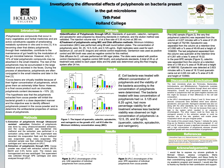It is becoming very clear that dietary polyphenols, through their metabolites, contribute to the maintenance of gut health by the modulation of gut microbial balance. However, only five to ten percent of total polyphenolic compounds may be absorbed in the small intestine. The rest may be accumulated in the large intestine or excreted in the feces. During the process of absorption, polyphenols are often conjugated in the small intestine and later in the liver.